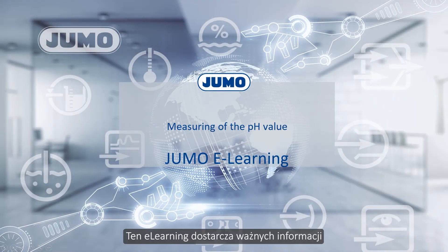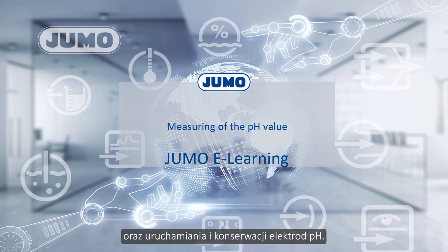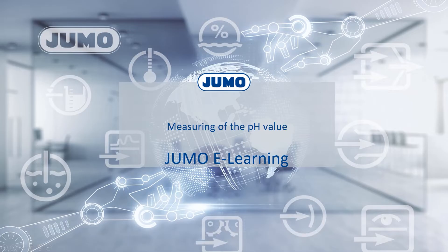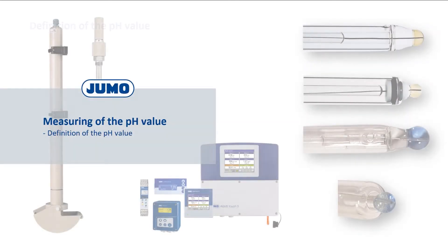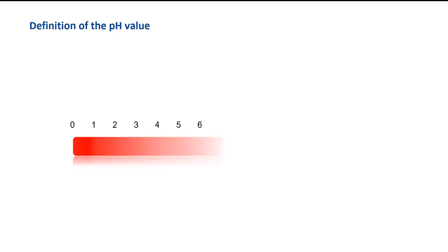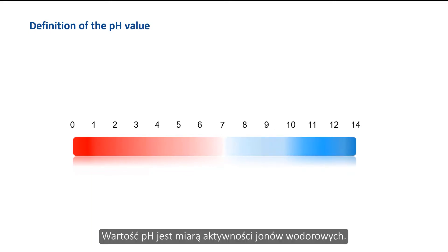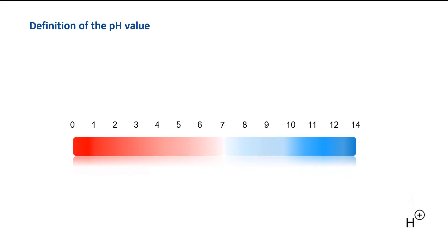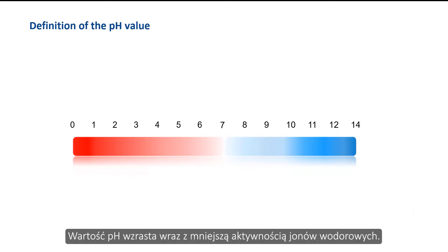This e-learning provides important information for measuring the pH value and for the commissioning and maintenance of pH electrodes. The pH value describes whether a medium reacts acidic, neutral, or alkaline. The pH value is a measure for hydrogen ion activity, and it increases with lower hydrogen ion activity.